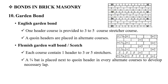The garden wall bond has two types: English garden wall bond and Flemish garden wall bond. In the English garden wall bond, there is one header alternated every three courses. The Flemish garden wall bond, also called Scotch bond, has a header placed within three to five stretchers in each course.